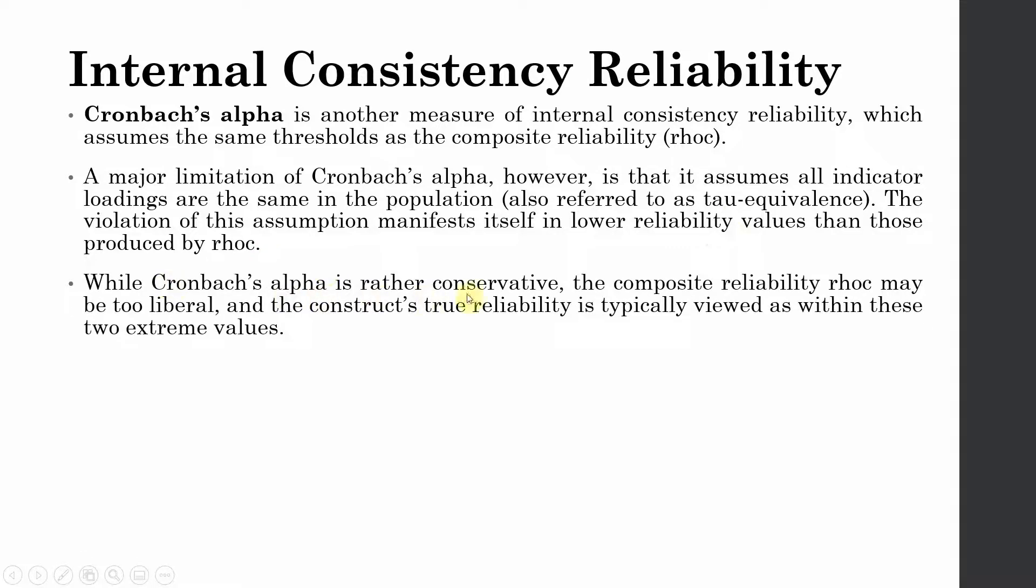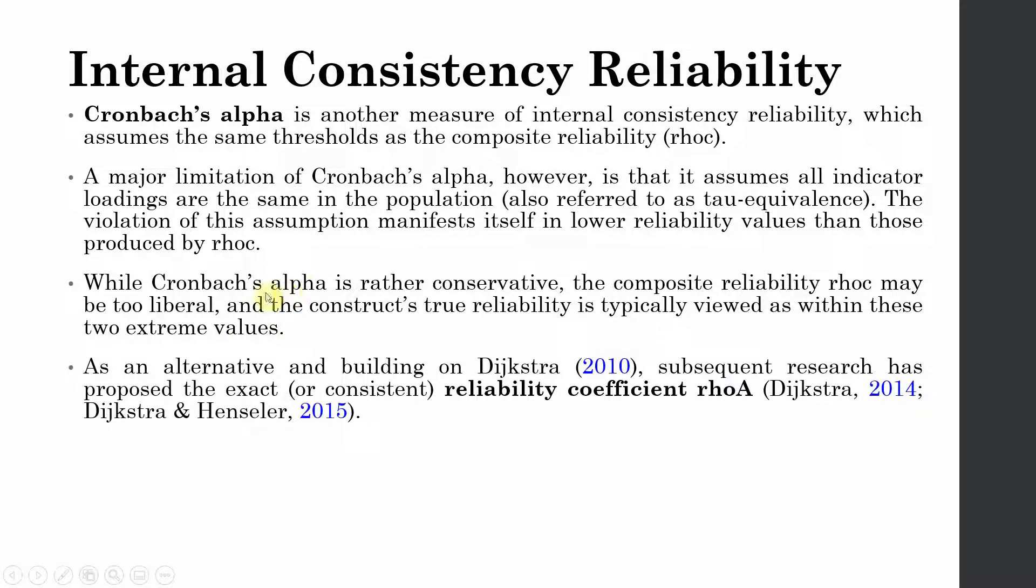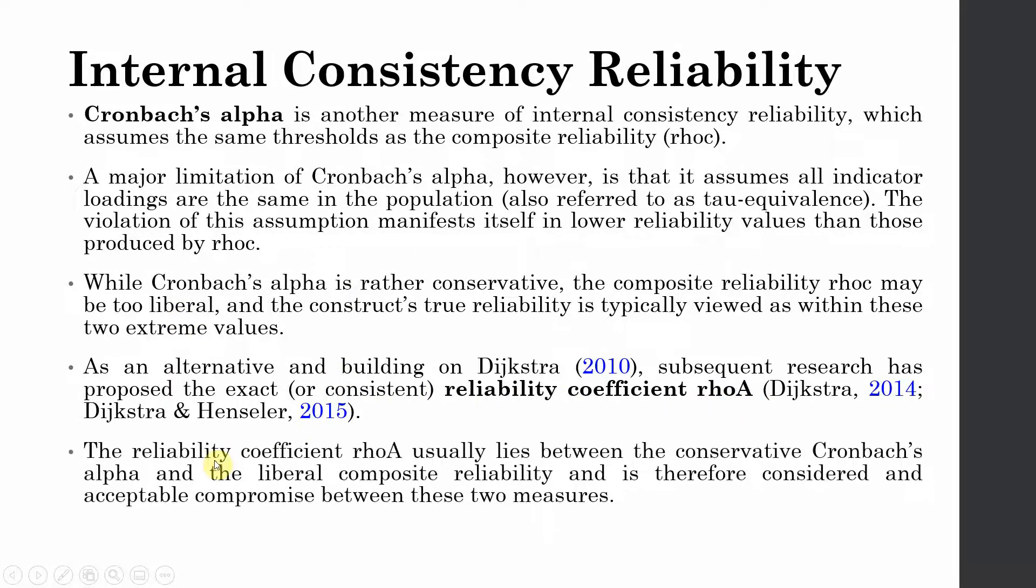While Cronbach's alpha is rather conservative, the composite reliability rho C may be too liberal and the construct's true reliability is typically viewed as within these two extreme values. Now in order to counter this, Cronbach's alpha which is conservative and composite reliability which is too liberal, we have got another reliability coefficient that is rho A. The reliability coefficient rho A usually lies in between the Cronbach's alpha, that is your conservative measure, and your liberal measure of composite reliability.